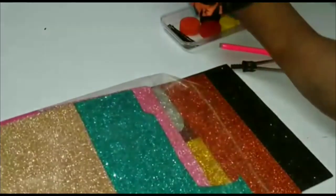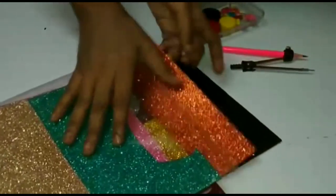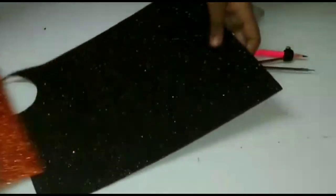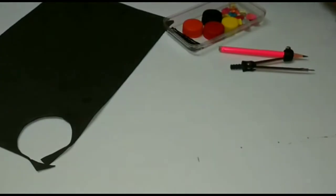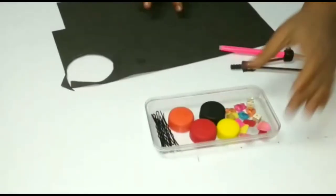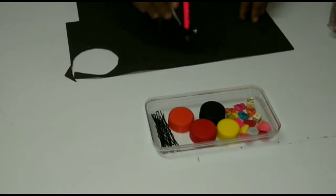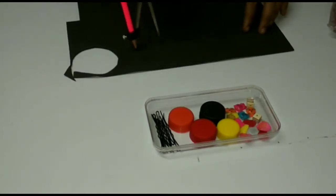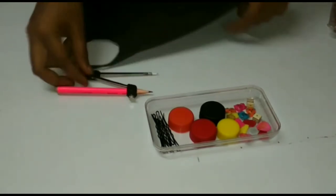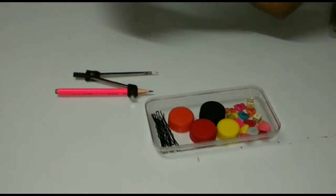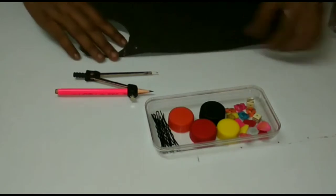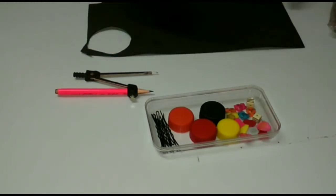Select any color glitter sheet. Suppose I take black. Take a compass and make a circle like this. Now cut out this circle with the help of scissors.